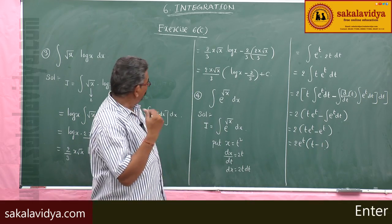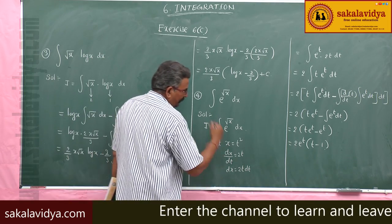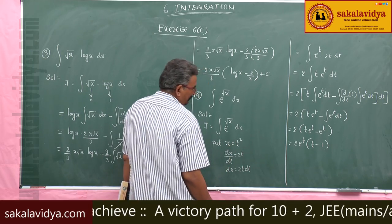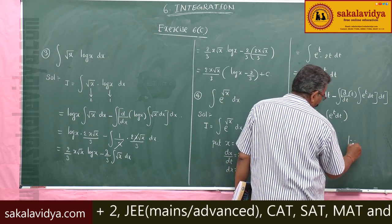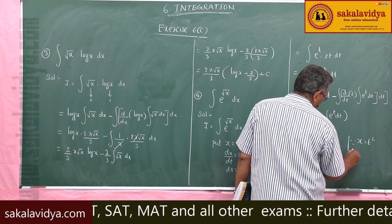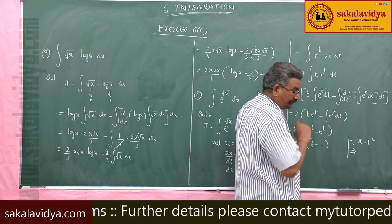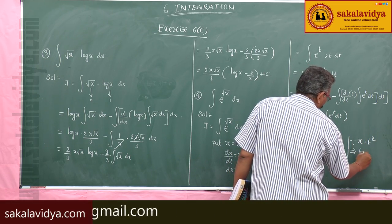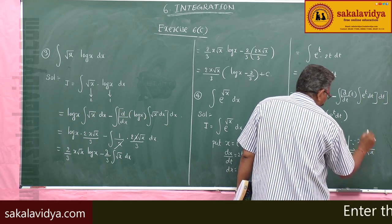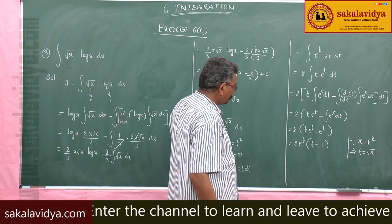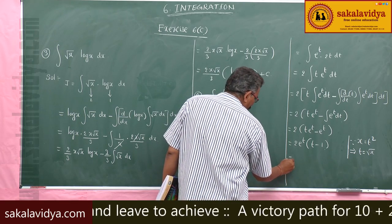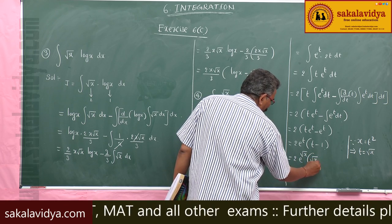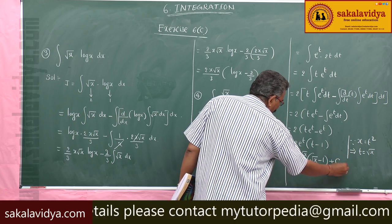Now back-substitute: since x = t², we have t = √x. So e^t = e^√x. The final answer is 2e^√x times (√x − 1) plus constant of integration.